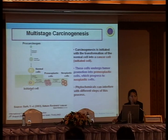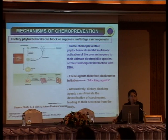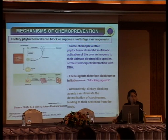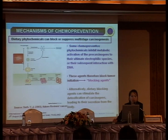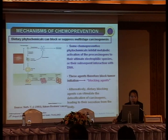This is the mechanism of chemo-prevention. Dietary phytochemicals can block or suppress multi-stage carcinogenesis. Some chemo-preventive phytochemicals work as blocking agents, such as ellagic acid — an active compound found in many types of berries like strawberry, redberry, and raspberry — and indole-3-carbinol, an active compound in cabbage, and sulforaphane in cruciferous vegetables, and flavonoids contained in various fruits and vegetables. These agents can inhibit the metabolic activation of pro-carcinogens, blocking tumor initiation. The active blocking agents can also stimulate the detoxification process, leading to secretion from the body.